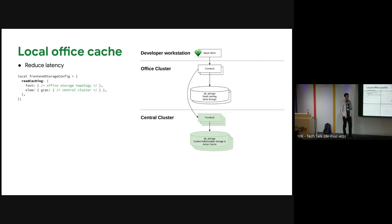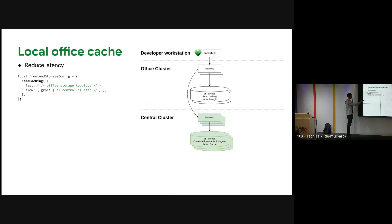Now we have multiple offices, so it's good to have an office cache to reduce latency. Let's have the central cluster somewhere in the cloud, and then add an office cluster with the frontend and local storage there. You get read caching with a fast office storage and a slow central cluster connection.